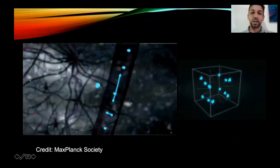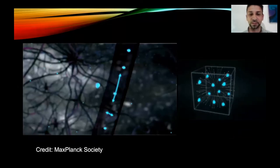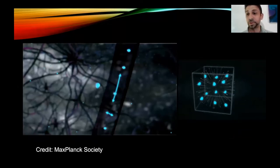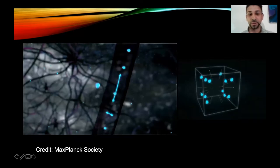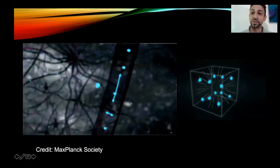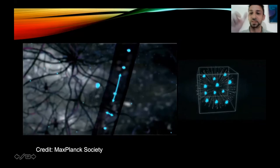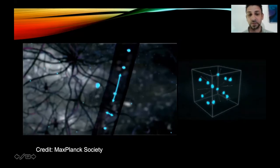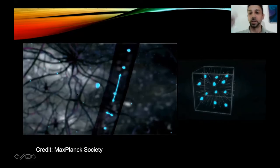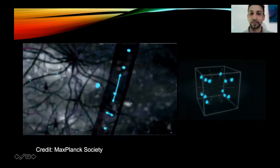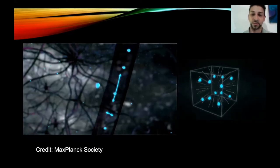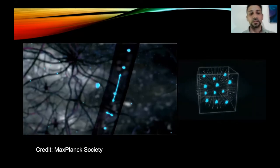Where do we start? We start from the fact that we have water. We are made of water and the brain is too. What happens is that water in the axons of neurons is confined by a membrane and takes the shape of the axons. With magnetic resonance imaging we can reconstruct the direction of the water in the axons.